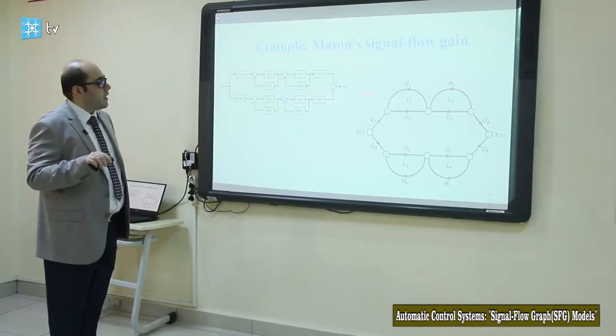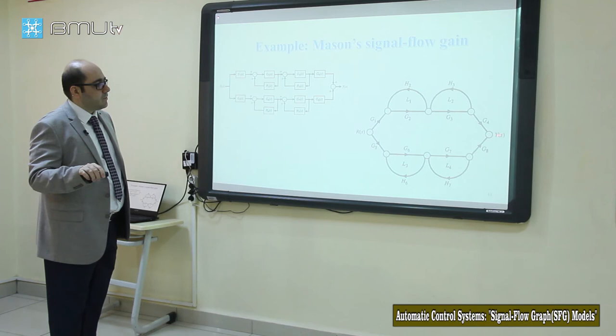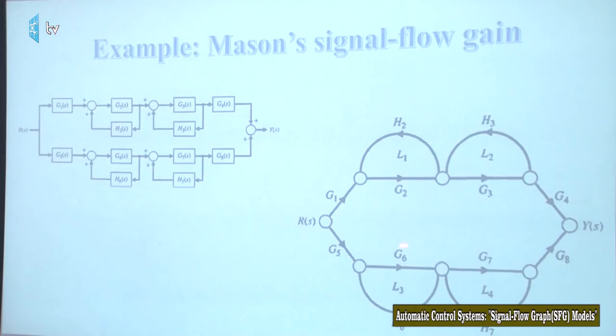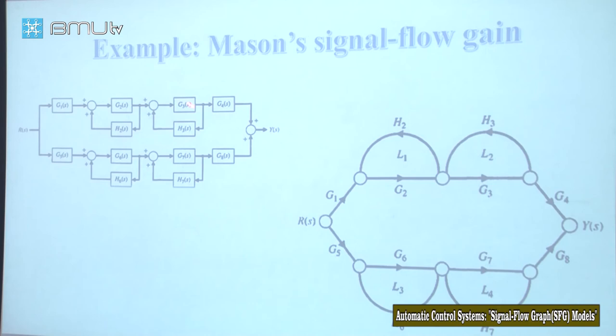Continuing from the source: G5, G6, H6, G7, H7, G8, and we reach the output (sink). So using the block diagram, we have drawn the signal flow graph of the system. Now using this graph we can calculate the transfer function.